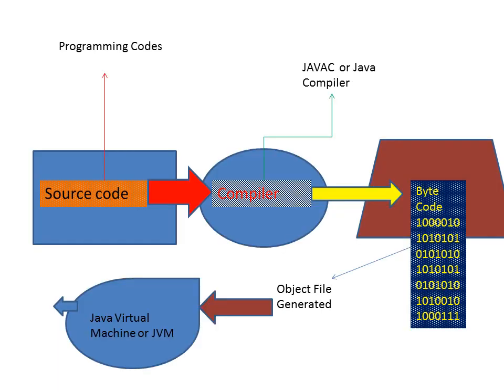The source code which we create using Java has a specific extension. When you write a program in Java, you give the extension called .java. That means if I have a file with a name, then the program name will be file.java. After compilation, the source code has been compiled by the compiler and it will generate a file with an extension called .class.